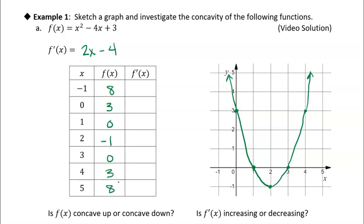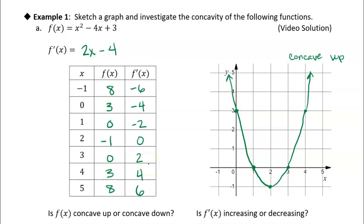I've written down the values when I plugged x into f of x, plotted those points, and connected them. You can see the concavity matches what we said was concave up. Now filling in the derivative column — plugging x values into the derivative function — you can see the derivative is a line with a slope of two, and the values are increasing as x increases.